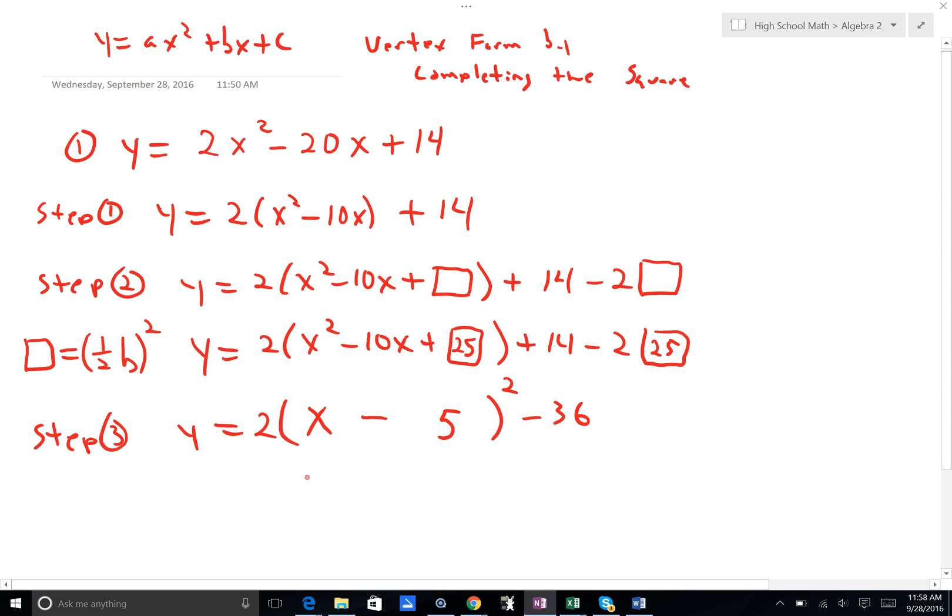We have obtained our vertex form. Now we can identify our vertex. That is the opposite of this, 5, exactly this, minus 36. These are directions for a translation. This is 5 units to the right and 36 units down. And we have our a value. This tells us that it will be a vertical stretch from our parent function. Our a value is greater than 1, and it will open upward. Since a is positive, the vertex will be a minimum value because when our graph is opening up, the vertex is a low y value.